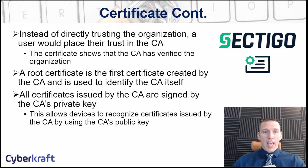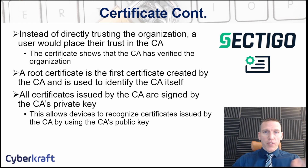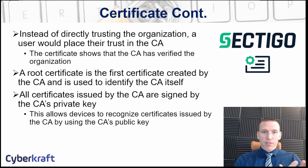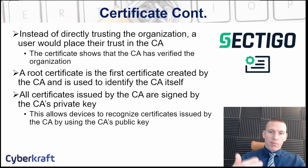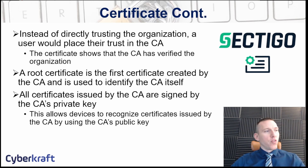A certificate authority has what's known as a root certificate, which is used to identify the certificate authority itself. It also has a private key and a public key. The public key is freely distributed and included on all of the certificates that the certificate authority issues. That public key travels with the certificate and allows users to verify that the certificate they have was issued by that certificate authority. Asymmetric encryption uses the certificate and the key pair to help prove an identity.